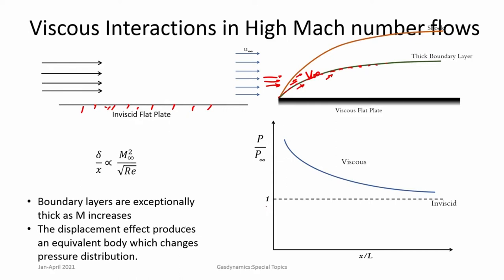Ideally, if you did not have the boundary layer — if it was completely inviscid — then you should have a constant pressure distribution. But because of the boundary layer and the viscous effects, there is a different pressure distribution that is felt. We now see that there is an interaction of the thick boundary layer with the outer inviscid flow, which is termed viscous interaction.